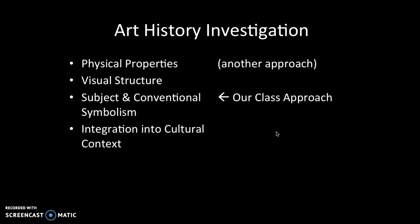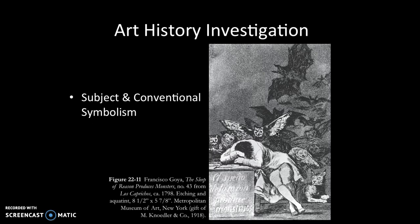Don't worry about understanding those entirely — the rest of this lecture will explain them. I'll start with what I think is probably easiest: subject and symbolism. Conventional symbolism is just a way of saying the symbolism from a particular time, where everyone agrees on what something means. For example, in Western culture in America, we tend to wear white wedding dresses. But in other parts of the world and other times in history, a white dress would have indicated mourning. Conventional symbolism can change, which is why we add that extra word: conventional.